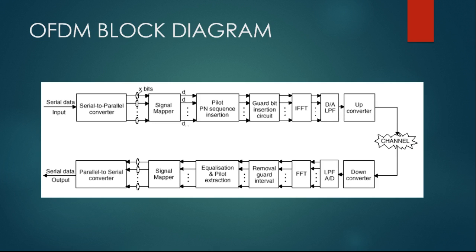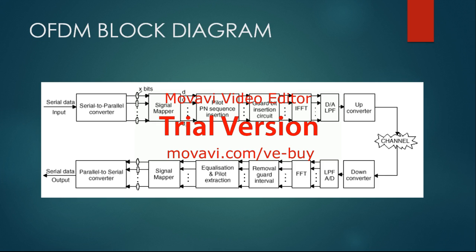There's a block diagram that explains how OFDM works. You take the input data as serial input data and convert it to parallel data so that you could assign a particular frequency for each data.